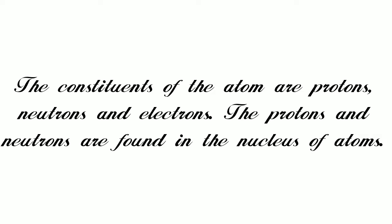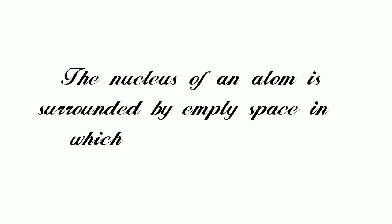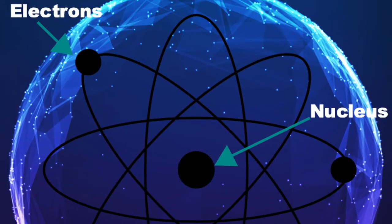The protons and neutrons are found in the nucleus of atoms. The nucleus of an atom is surrounded by empty space in which there are electrons.